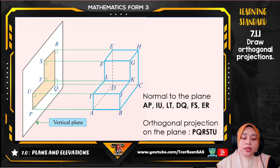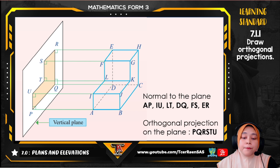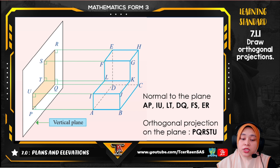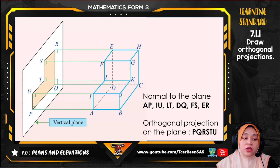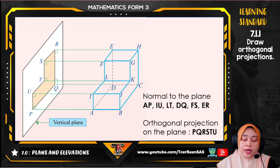The orthogonal projection on the plane is P, Q, R, S, T, U. To state the orthogonal projection, just read the alphabet letters found on the drawing on the plane.